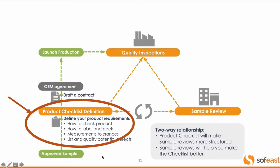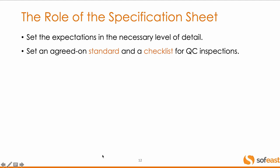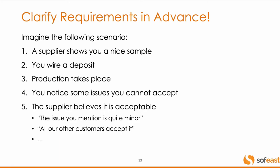What is the role of the product checklist? It sets your expectations at the necessary level of detail — what is this component made of, what is this dimension supposed to be, and so on. It becomes also part of your standard and then it becomes a checklist for QC inspections but also for sample reviews. What is very, very important — and a lot of first-time importers don't realize this — is you need to clarify your requirements in advance.